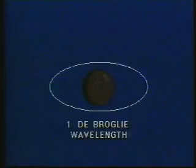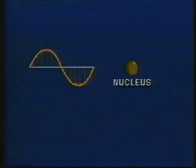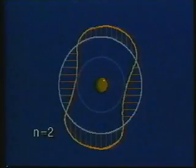De Broglie proposed that in the ground state, or first energy level, the circumference of the electron orbit is one De Broglie wavelength. This single wavelength fits around the atom's nucleus at a distance that allows the wave to interfere with itself and form a stationary or standing matter wave. In the second orbit, n equals two, two De Broglie wavelengths fit about the nucleus, at a distance which once again produces a standing matter wave.